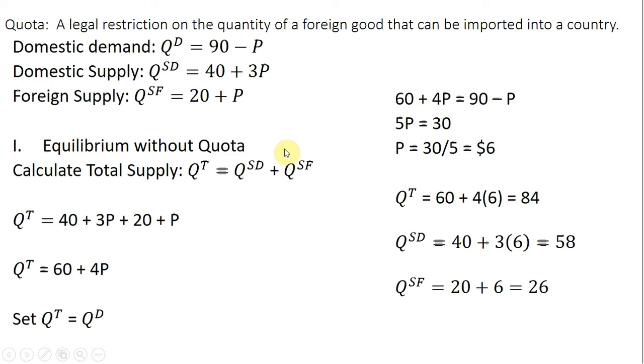The first thing we're going to do, we're going to find the equilibrium in this domestic market without a quota. So the first thing we'll do is we'll calculate total supply.